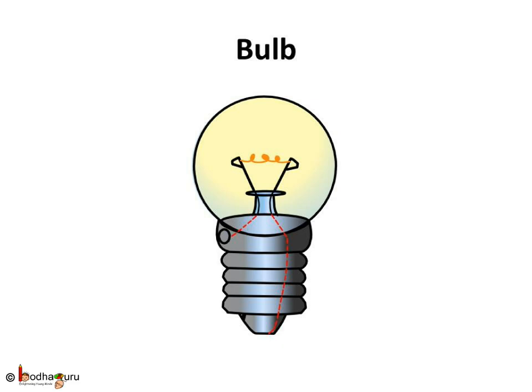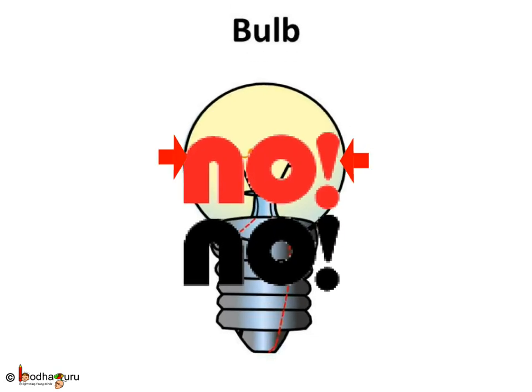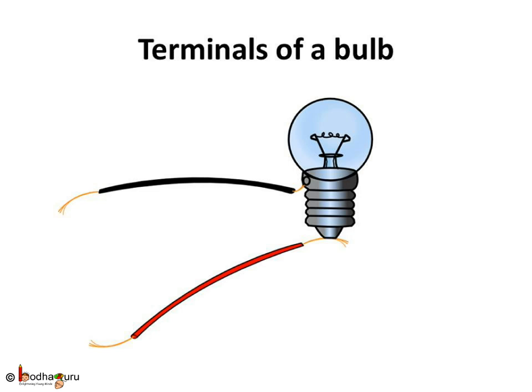Now, how would we connect a bulb to a cell to make it glow? If we just connect any part of the bulb using wires to the cell — say, the part made of glass — would the bulb glow? No. There are fixed places on the bulb which we have to connect with the ends of the cell to make the bulb glow. The first place is the screw marks on the metal base of the bulb. The second place is the tip of the metal base of the bulb. These places are called terminals.